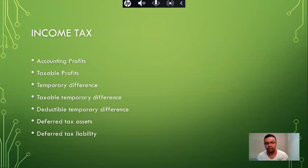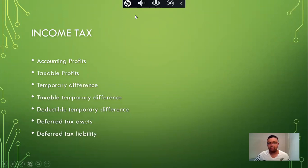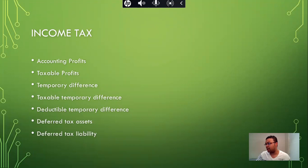We'll be discussing the different terms under the income tax subject such as accounting profits, taxable profits, temporary difference, taxable temporary difference, deductible temporary difference, deferred tax, and deferred tax liability. Accounting profit, also known as income before tax, is disclosed within the company's income statement as per financial standards. Taxable profit is the gain or loss realized upon which income taxes are due by an entity. It is based solely on operating profits; however, taxable earnings can arise from dividend income, interest earnings, and capital gains.